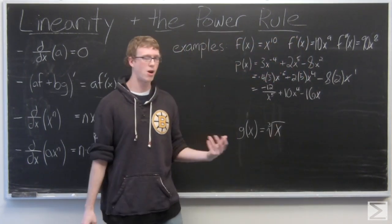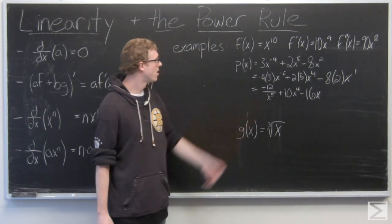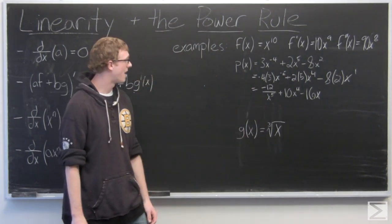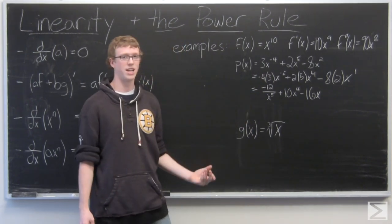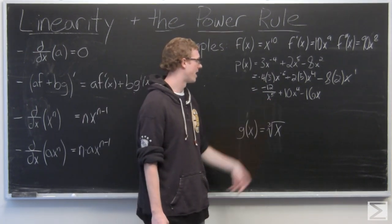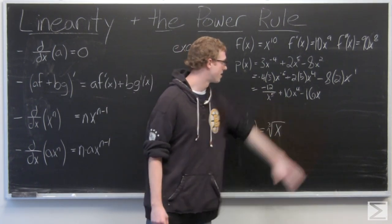Now I got rid of the power of 1 there because x to the first is just x. And what I did here was I shifted 5 to the denominator. Now this could be written as negative 12x to the negative 5. I've chosen to write it as negative 12 over x to the fifth plus 10x to the fourth minus 16x.